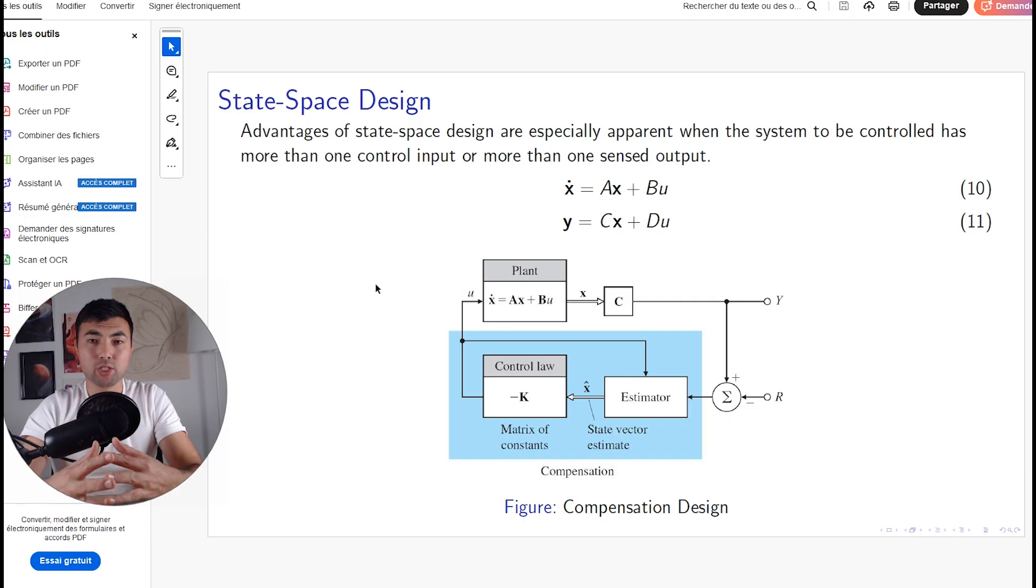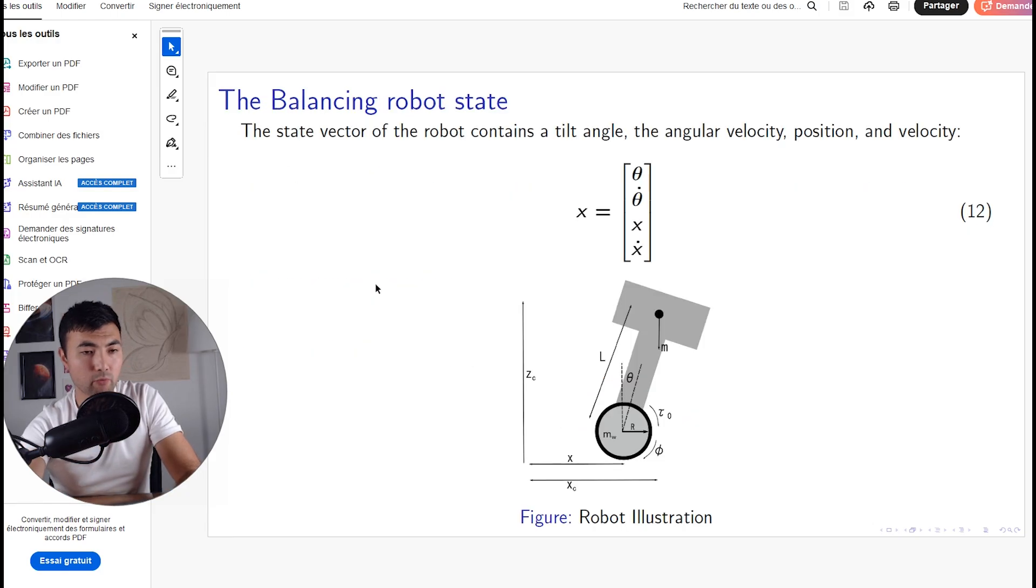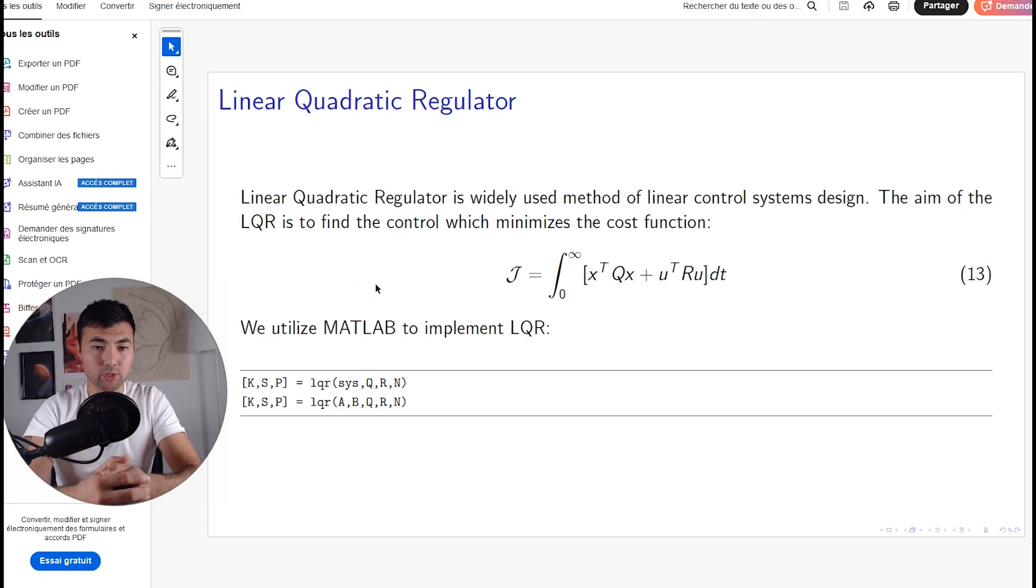So the next question is, how can we define the gains of the LQR? For that, we have the cost function. The cost function allows us to compromise between the control and the power.